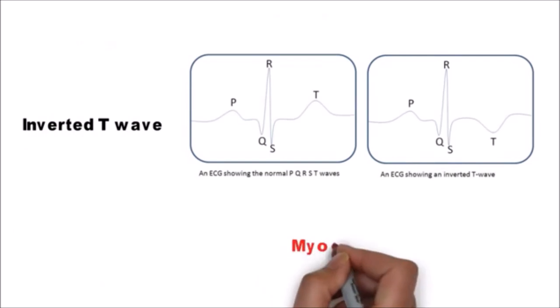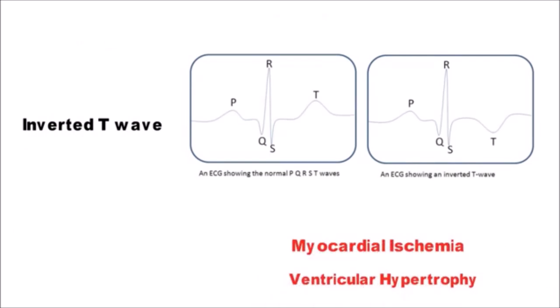Inverted T-waves are seen in myocardial ischemia or infarction or can be in ventricular hypertrophy.